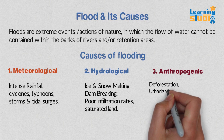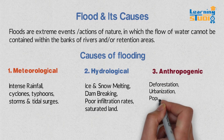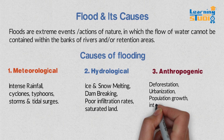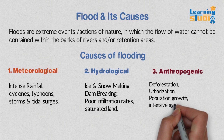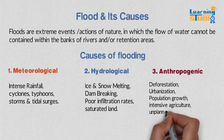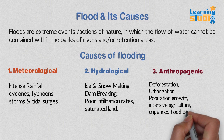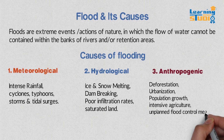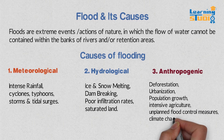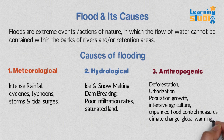Anthropogenic causes are deforestation, urbanization, population growth, intense agriculture, unplanned flood control measures, climate change, and global warming. To be continued.